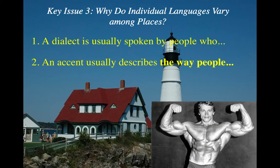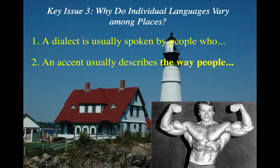Question three: why do individual languages vary among places? A dialect is spoken by people using their mother tongue, but they sound different. Think New England — you can see the picture of somewhere in Maine. They still speak English, using the same words and spellings, but they pronounce things differently. We all use the word 'accent' incorrectly, because an accent is actually how people speak when they're not using their native language. Arnold Schwarzenegger is a good example — English is not his native language, Austrian is, so he speaks English with an Austrian accent. People in New England speak English with a New England dialect, not an accent.